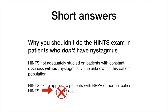In fact, if you applied the HINTS exam to normal people — that is, those without vertigo or nystagmus — again you would see a normal head impulse test, and if you weren't thinking straight, you might think this normal person without vertigo or nystagmus was having a cerebellar stroke. So you can only use the HINTS exam when the patient has ongoing constant vertigo and nystagmus.